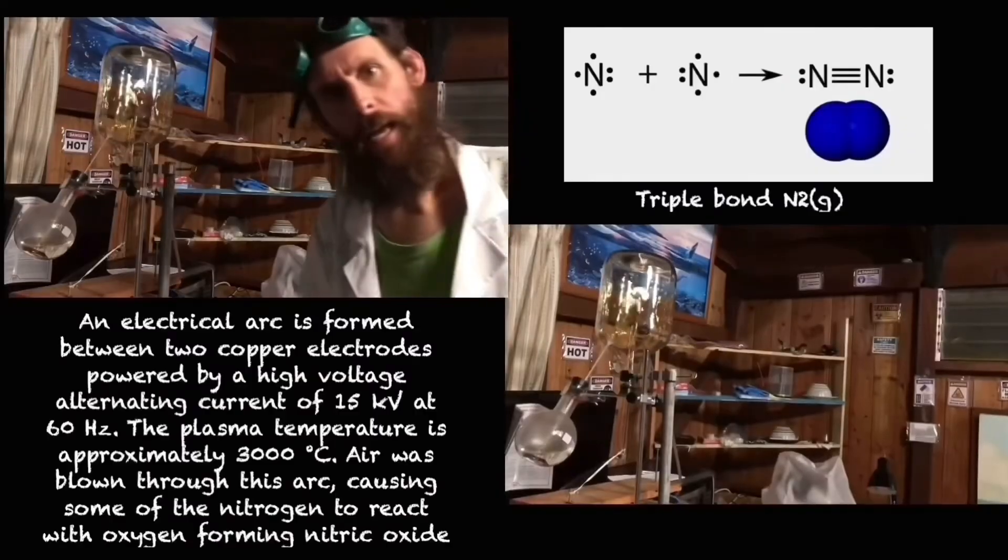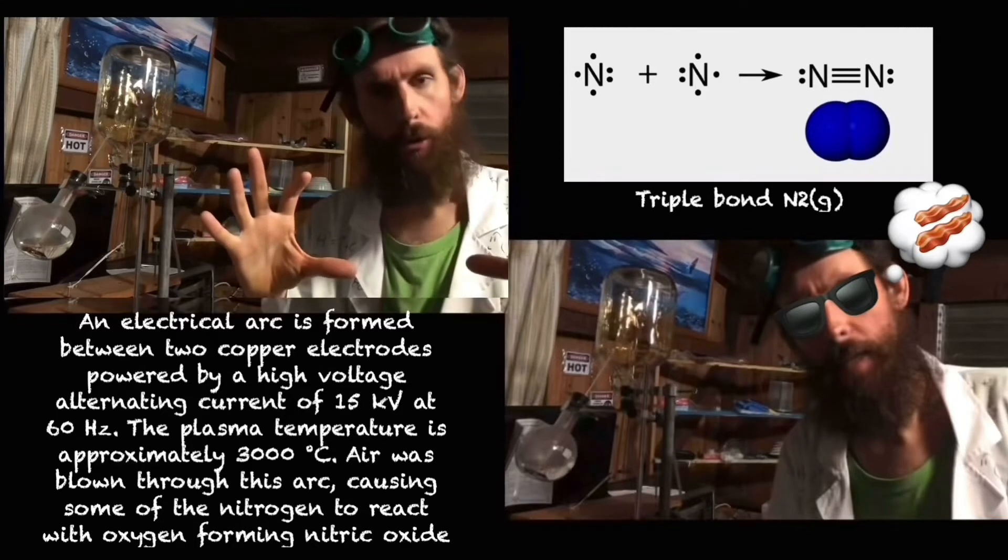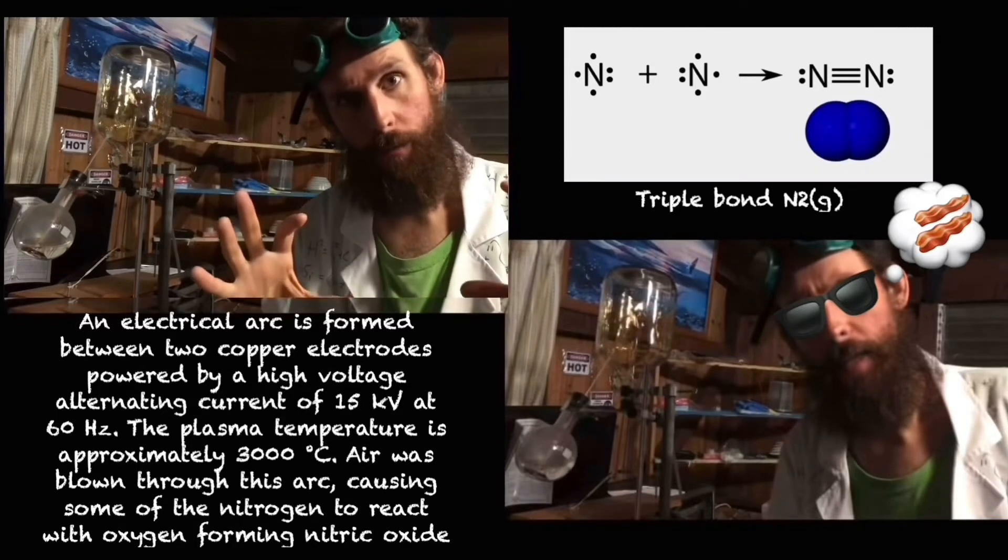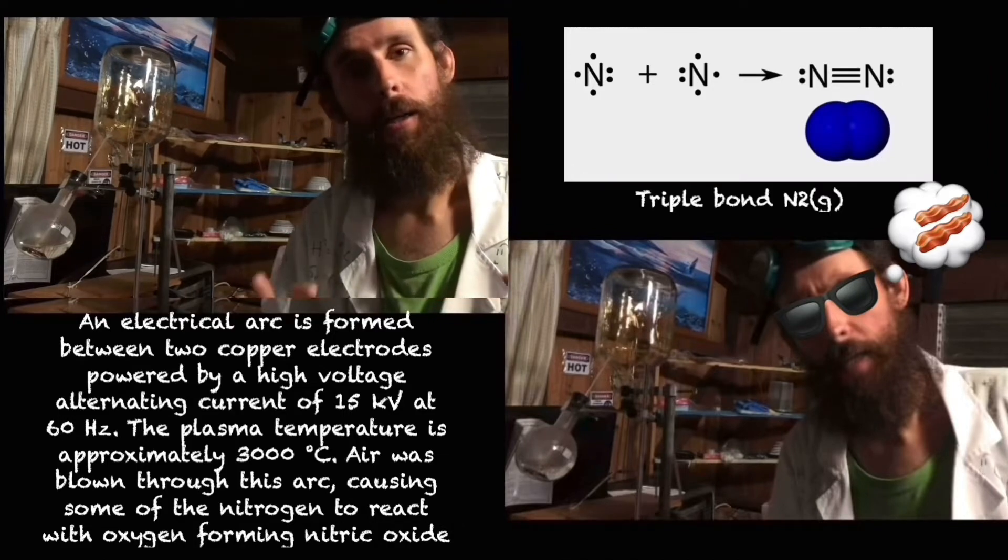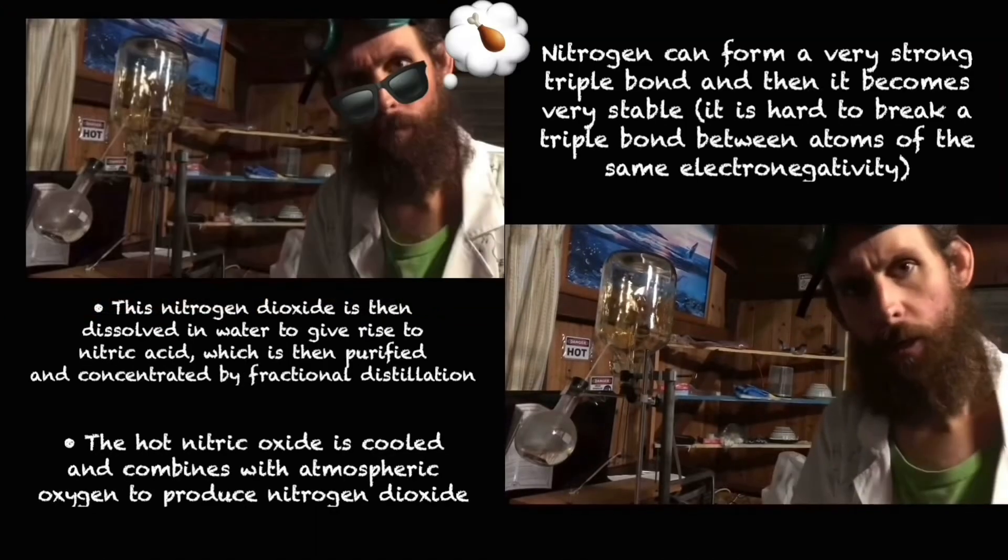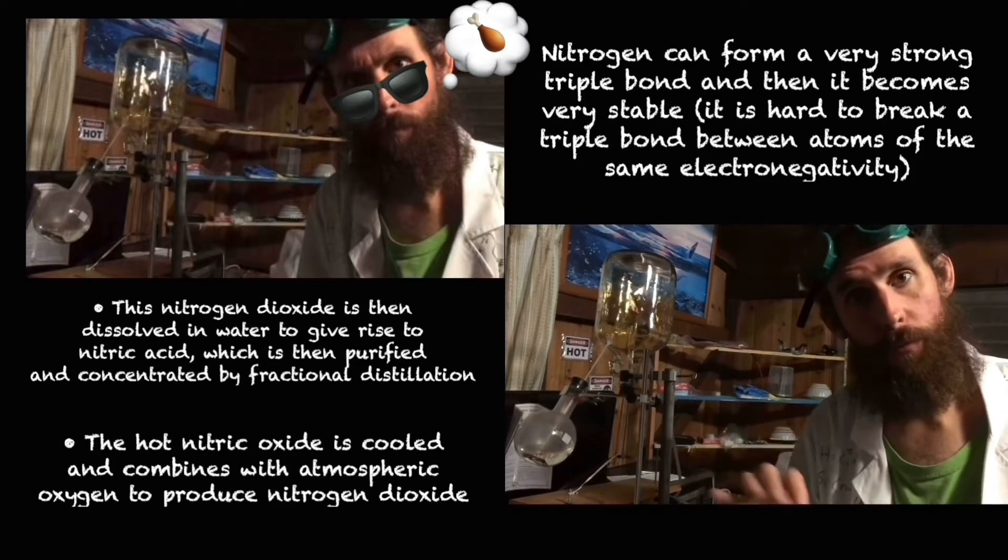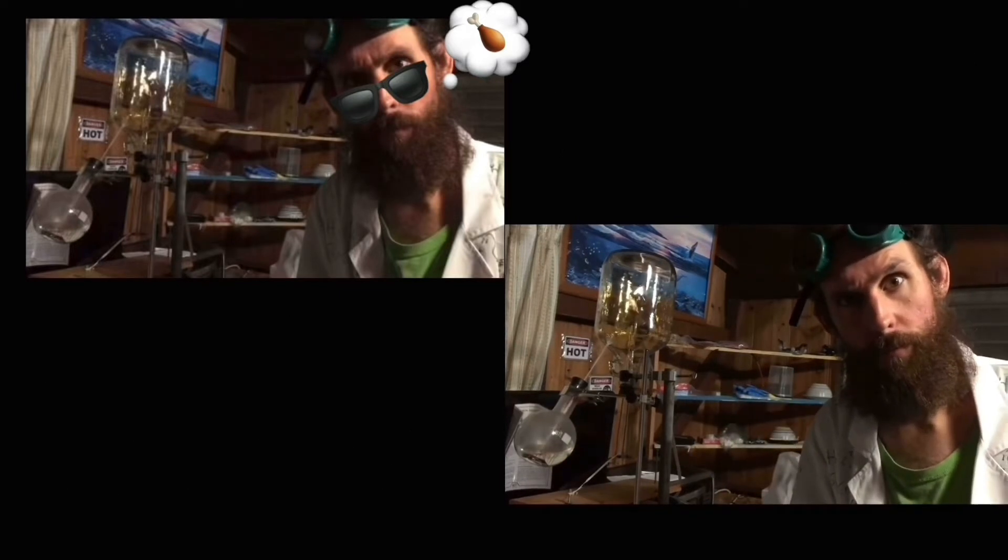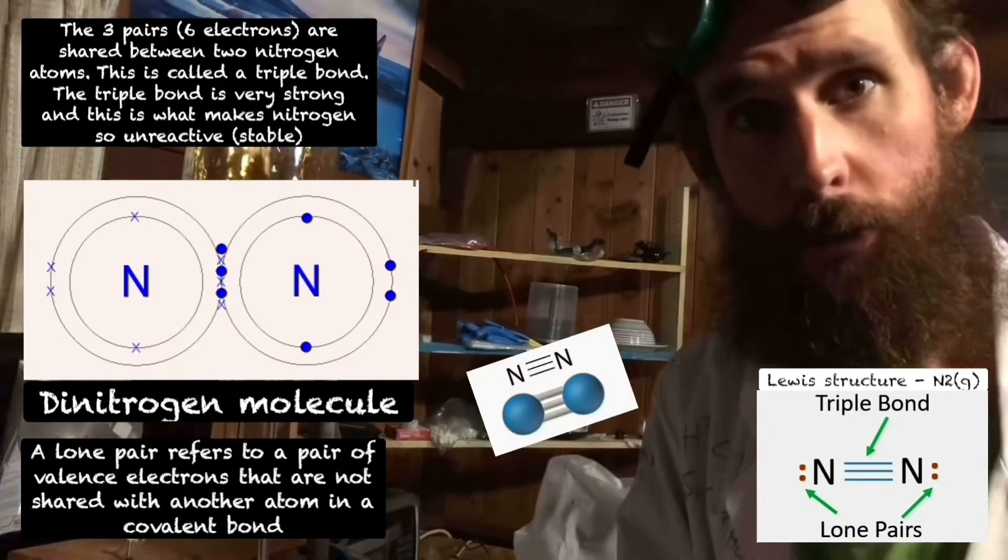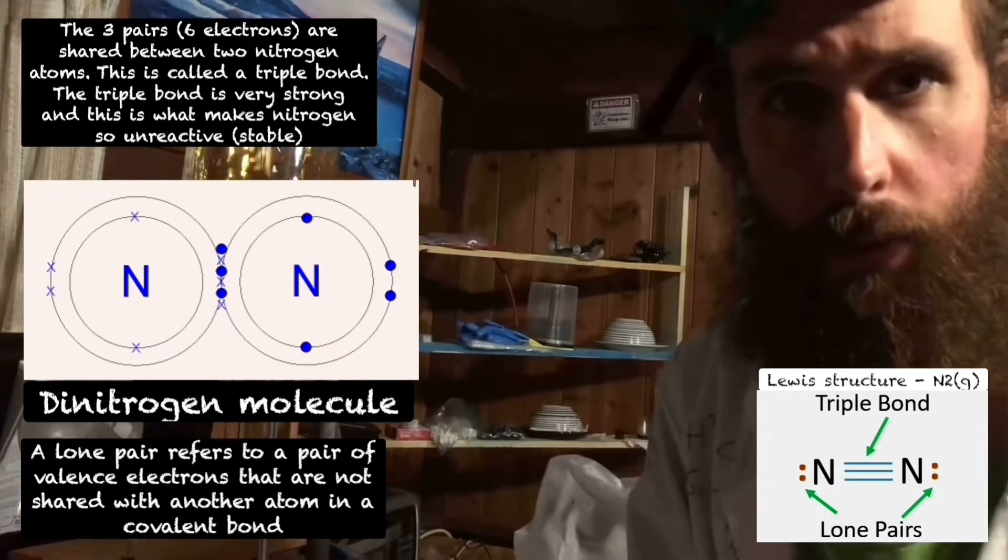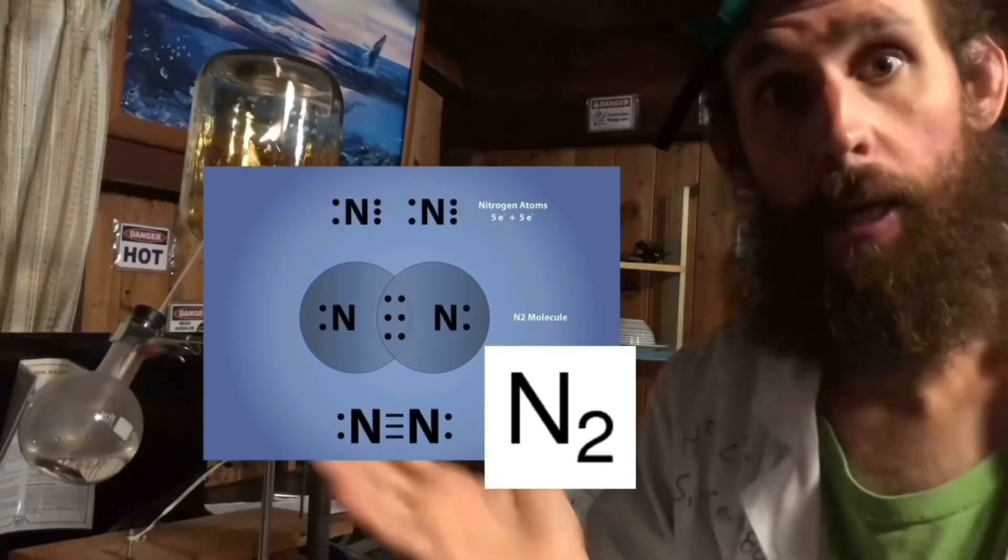Atmospheric nitrogen has a triple covalent bond. Nitrogen is a non-metal. The outer shell of nitrogen contains five electrons. Two nitrogen atoms share three electrons each, forming three covalent bonds, a nitrogen molecule of N2.